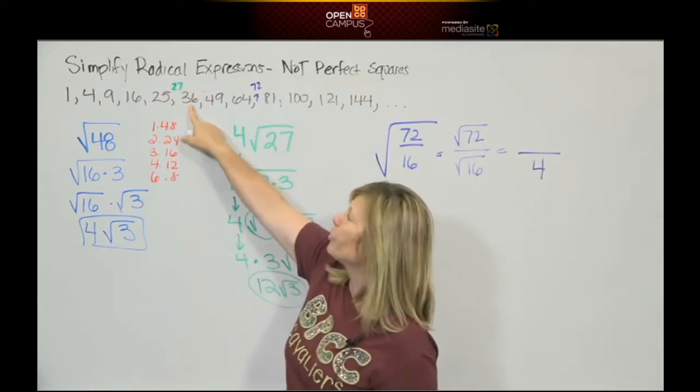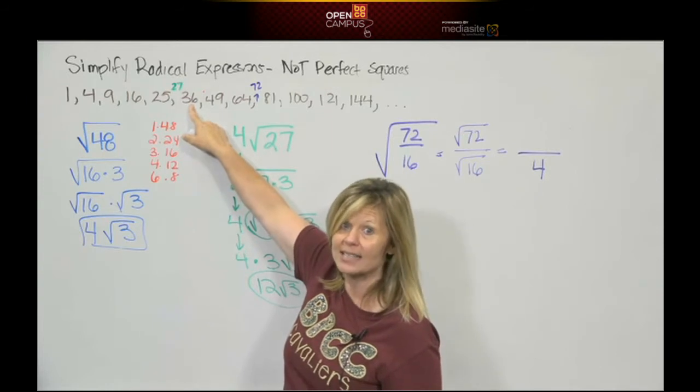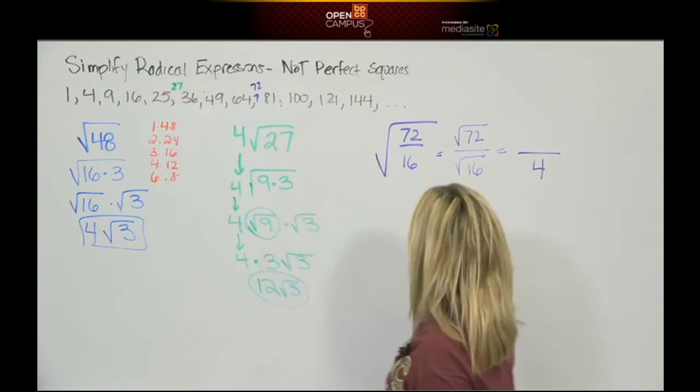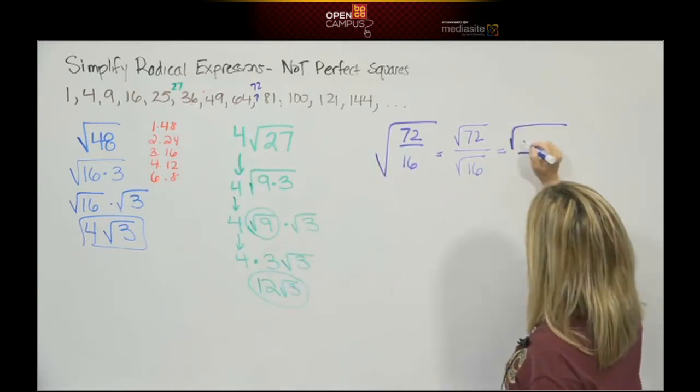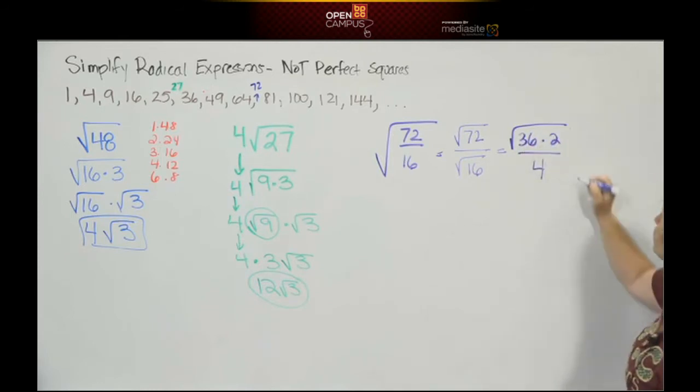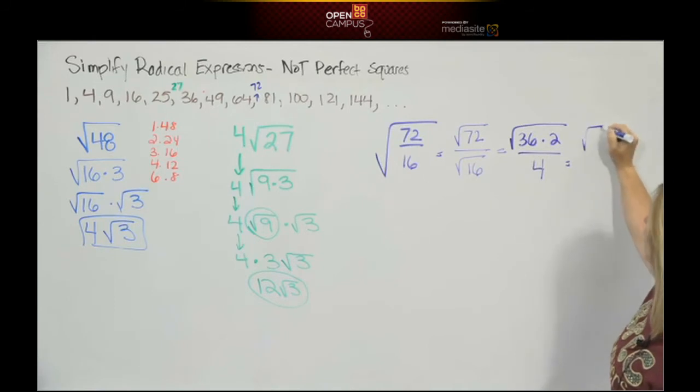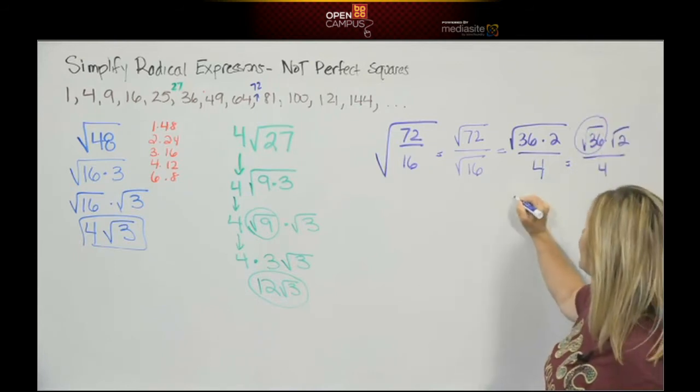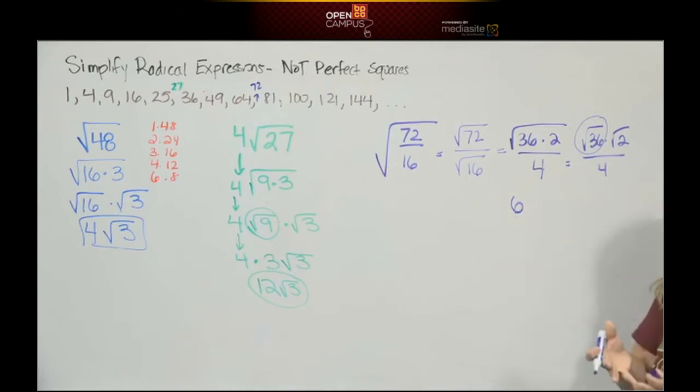If you look closely, 36 divides into 72. 36 times 2 is 72. So I'm going to write this as 36 times 2. I'm going to break this apart. I'm doing the square root of 36 times the square root of 2 over 4. We all know what is the square root of 36. Well that's easy. That's a 6. It comes out because we did the operation.